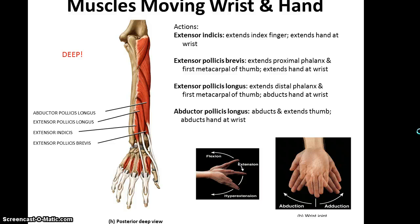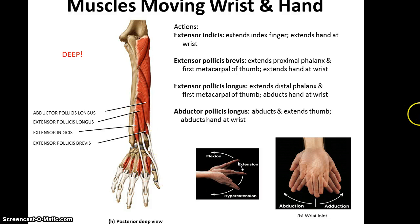Deep to these, we have the extensor indicis, which extends the index finger as well as the hand at the wrist. We have the extensor pollicis longus and extensor pollicis brevis, both of which help extend the thumb as well as extending the hand. The extensor pollicis longus also can help abduct the hand at the wrist. And then we have the abductor pollicis longus, which abducts and extends the thumb and can also abduct the hand at the wrist.